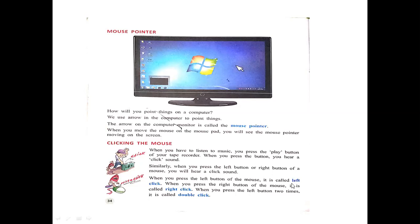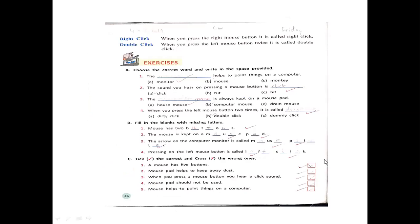This is page number 35. I have explained all the basic concepts. Now let's go to the exercise. Choose the correct word and write in the space provided. Number one: the dash helps to point things on a computer — the answer is mouse pointer. Number two: the sound you hear when pressing a mouse button is click. Number three: the dash is always kept on a mouse pad — the answer is computer mouse. Number four: when you press the left mouse button two times, it is called double click.